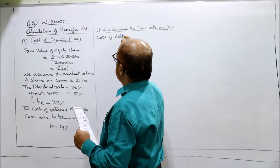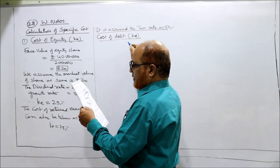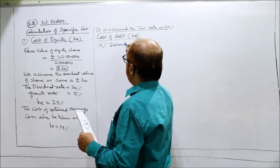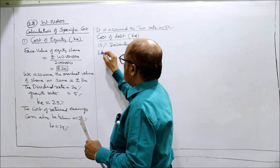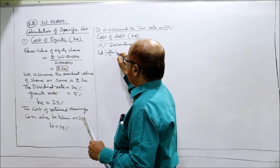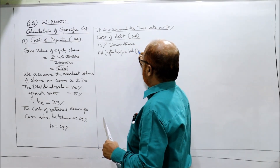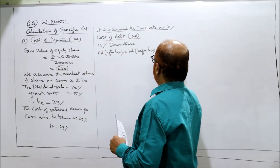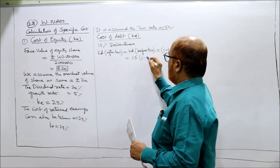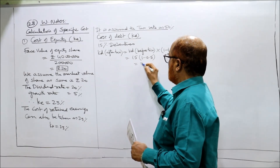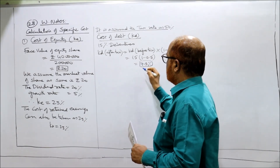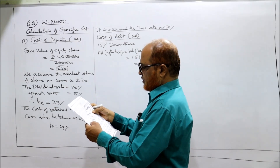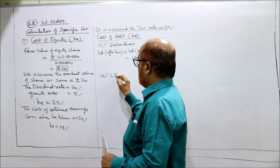Cost of debt KD: for 15% debentures, KD after tax is equal to KD before tax into 1 minus T. So 15 into 1 minus 0.5 is equal to 7.5%. Similarly, for 14% long term loan, KD after tax is equal to 14 into 1 minus 0.5, that is equal to 7%.